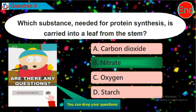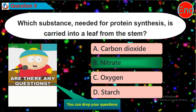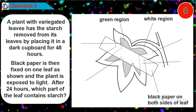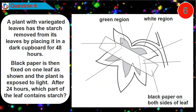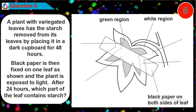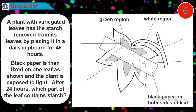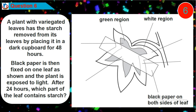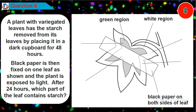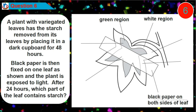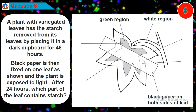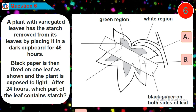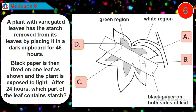Do not forget to drop your comment in the comment section. Question six: a plant with variegated leaves has the starch removed from its leaves by placing it in a dark cupboard for 48 hours. Black paper is then fixed on one leaf as shown, and the plant is exposed to sunlight. After 24 hours, which part of the leaf contains starch? Is it option A, B, C, or D?